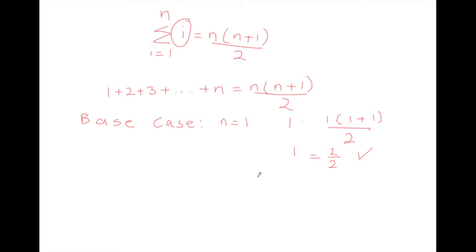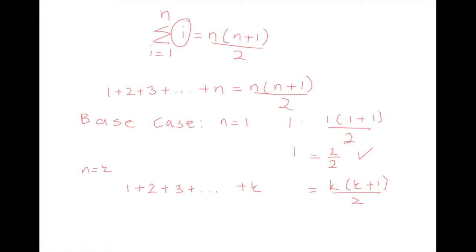The next part involves the inductive step, but first we establish the inductive hypothesis. We assume the statement is true for n equals k, meaning the sum of the integers from 1 through k is given by k times (k plus 1) all over 2. We then add the (k plus 1) term to both sides to show the inductive step — that the statement is true for k plus 1.